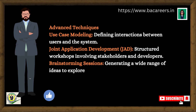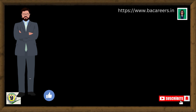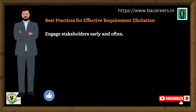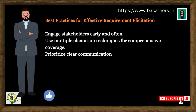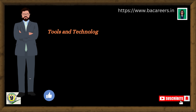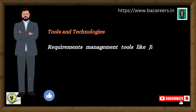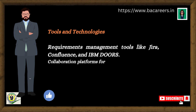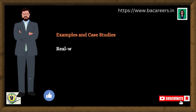Brainstorming sessions generate a wide range of ideas to explore various solutions. Best practices for effective requirement elicitation include: engaging stakeholders early and often, using multiple elicitation techniques for comprehensive coverage, prioritizing clear communication and documentation, and validating and verifying requirements with stakeholders to avoid misunderstandings. Tools include requirements management tools like Jira, Confluence, and IBM Doors, as well as collaboration platforms for seamless communication and documentation.